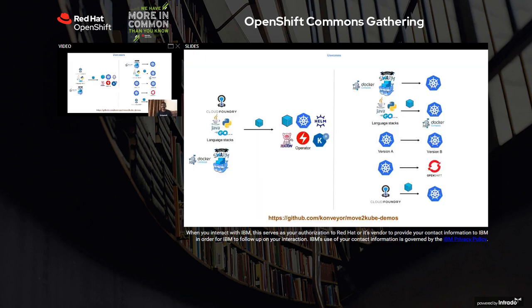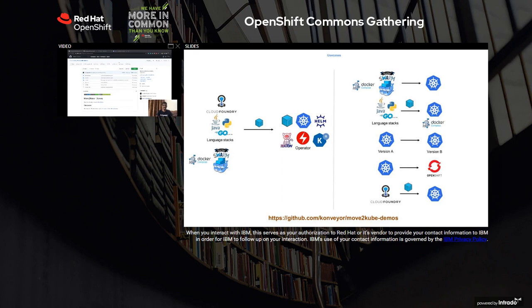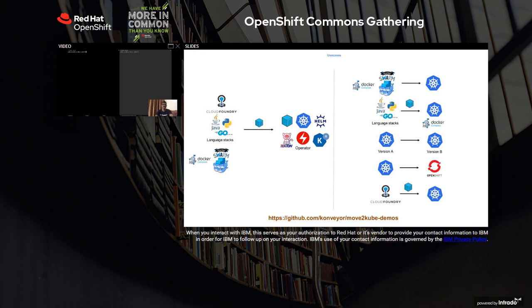Now let's look at a few demo flows showing how source platforms can be translated to Kubernetes. The demos today are available in the Move2Kube demos repository, which has a tutorials folder explaining different steps and a samples folder with sample applications. We are going to use a checked-out version of that folder. The samples folder has multiple different kinds of applications. The first one we're going to look at is the E2E flow, where there are two applications: a Golang application and a Node.js application.